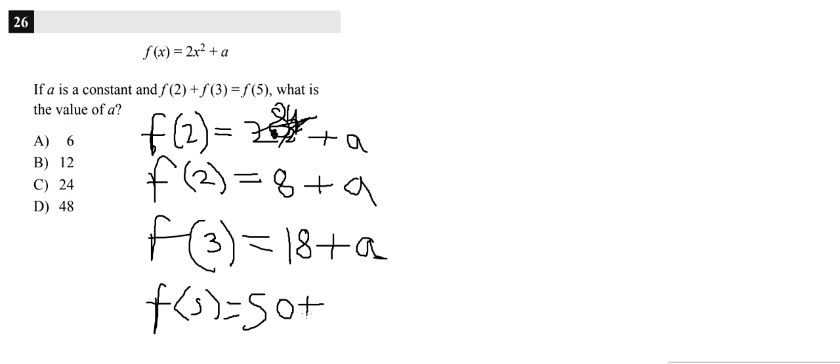Now, basically, what you can write, so you substitute F of 2, which I'll do in this nice red color, F of 3, I'll do in this yellow, and then F of 5, for you, I'll do in this green. So basically you're going to substitute F of 2, which we calculated for, is this right over here.